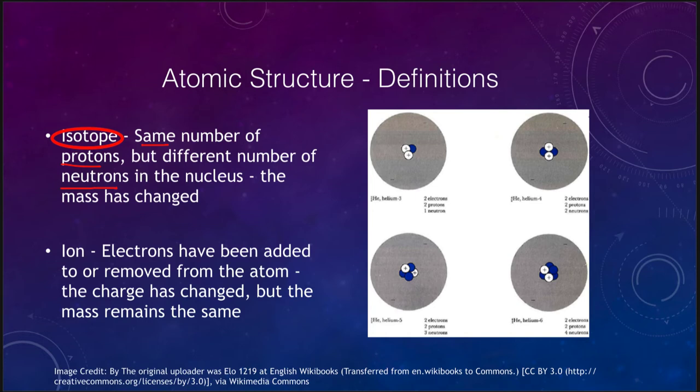Those are all helium because the atom is defined by the number of protons in the nucleus and each of these has two protons. The difference is the number of neutrons that they have. Helium-3 has one neutron, helium-4 has two neutrons, helium-5 has three, and helium-6 has four. So what has changed is the mass of the atom. We can tell which atom they are depending on the number of neutrons in the nucleus. If you change the number of protons, you change actually what the atom is.